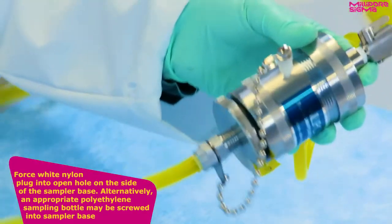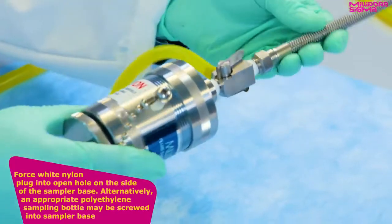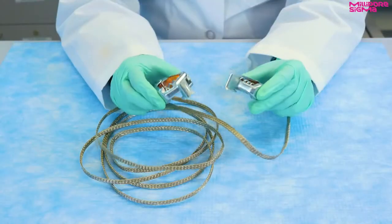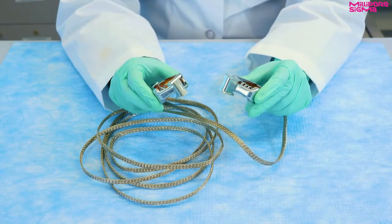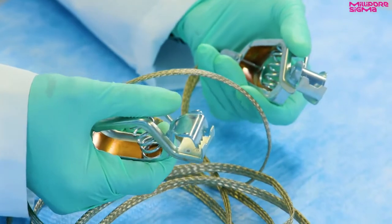Alternatively, an appropriate polyethylene sampling bottle may be screwed into the sampler base. An additional grounding wire is included in the kit if needed. Be sure to ground your setup to ensure your safety.